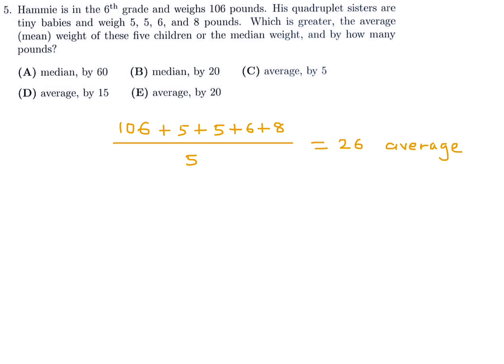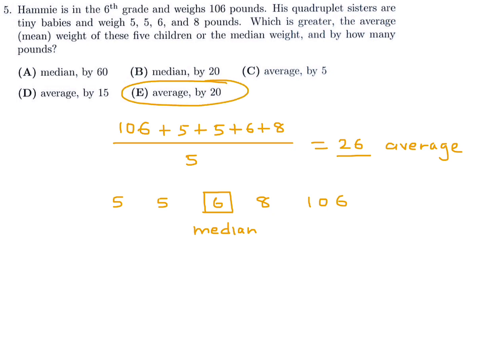Now for the median — arrange the numbers from smallest to largest and look at the middle number. The middle number is 6, so the median is 6. The average (26) is larger than the median (6) by an amount of 20. The average is larger than the median by 20, which is represented by choice E for number 5.